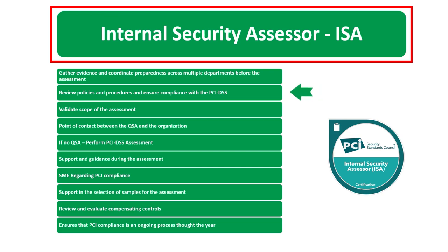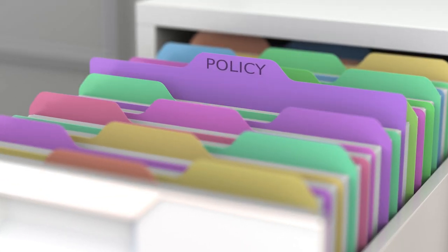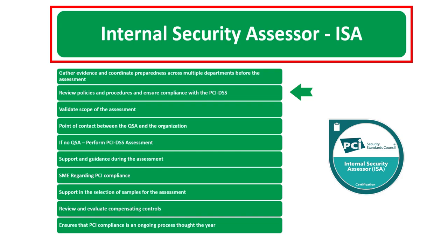The ISA also reviews policies and procedures to ensure compliance with the PCI DSS. This role is not necessarily creating those policies and procedures, but spending a lot of time reading internal documents and making sure they align with PCI requirements. If a document doesn't meet the intent of PCI, the ISA is the one who says we need to change or add something to be PCI compliant.